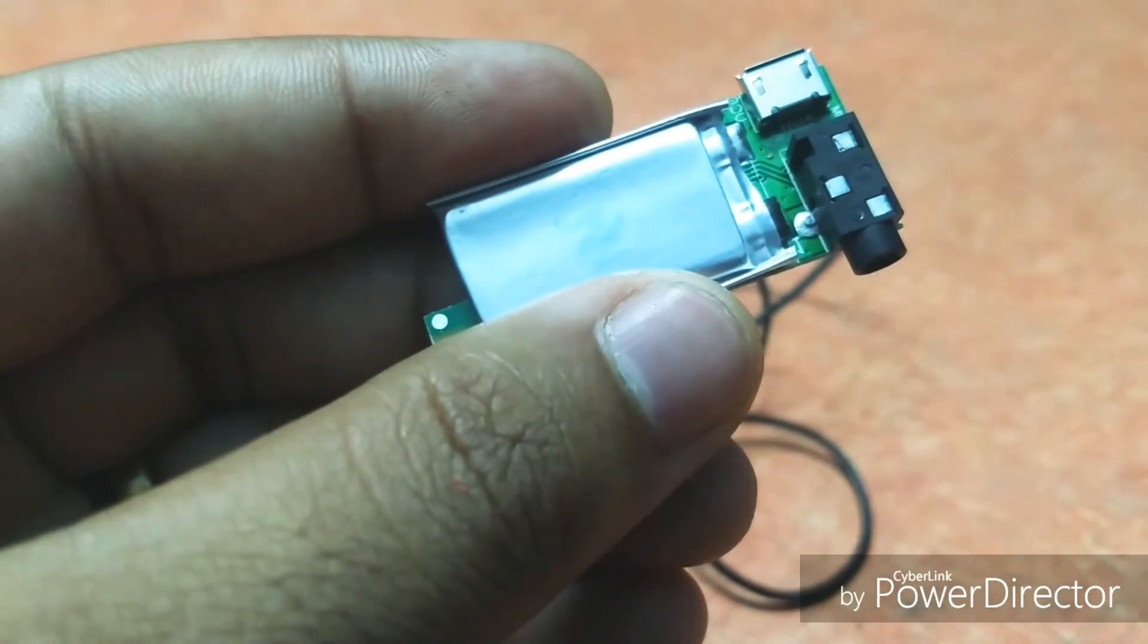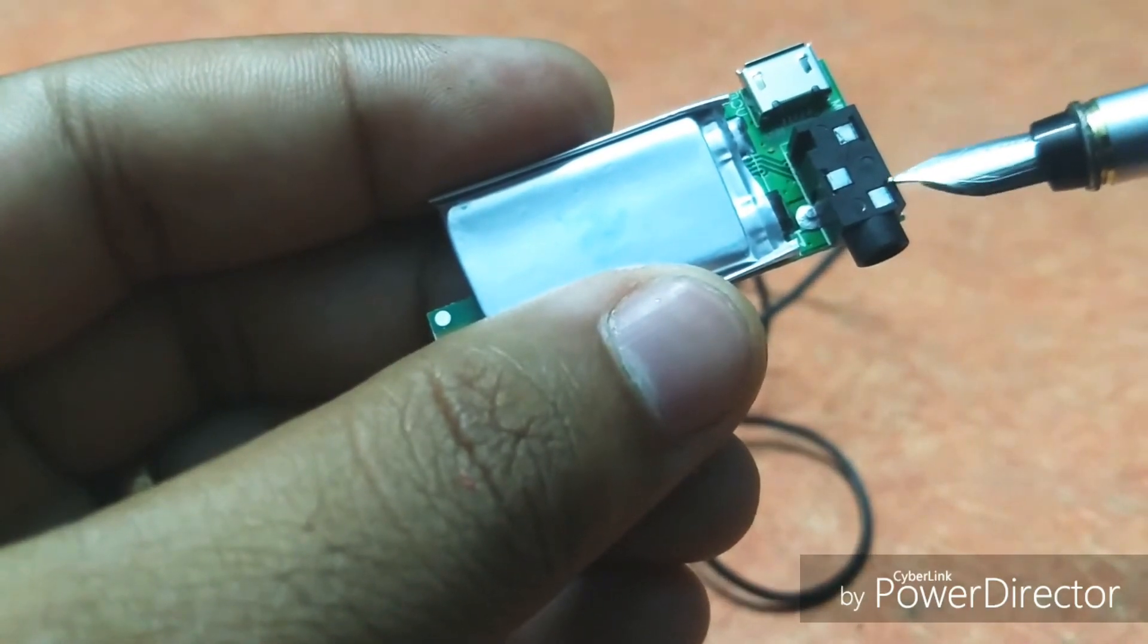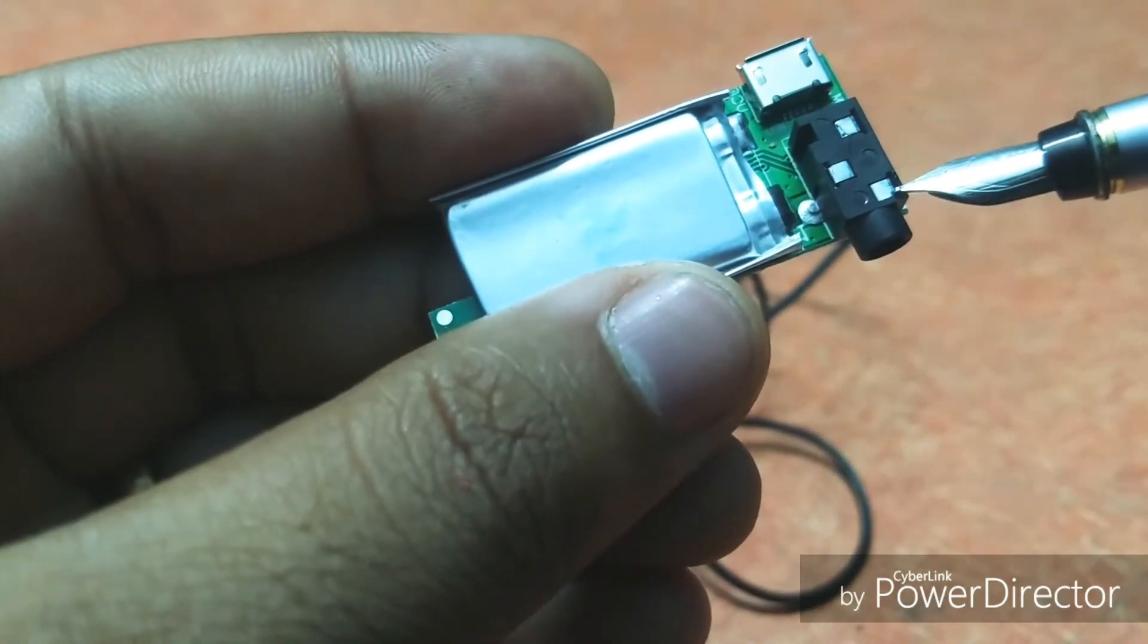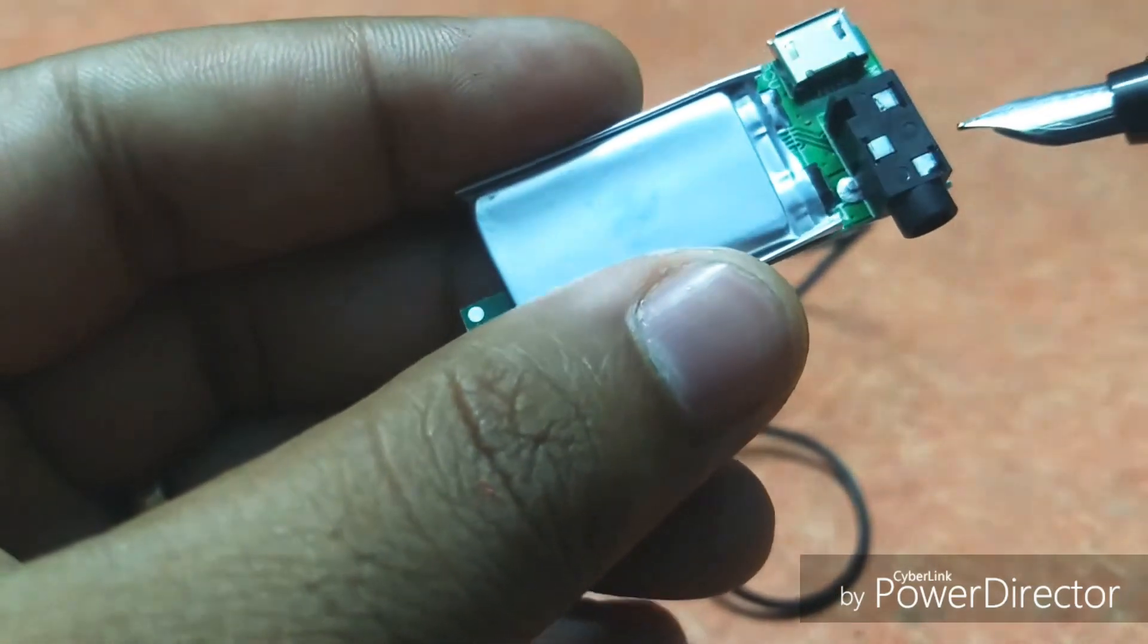You can interchange these two points, no problem, but you have to be careful about this point. This is the common point where two wires will come together. You can make use of these points also, as these are internally connected.